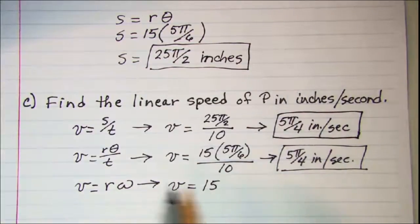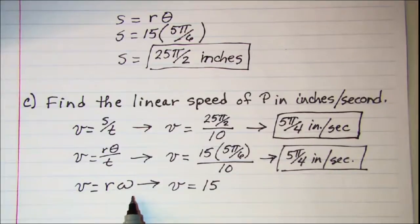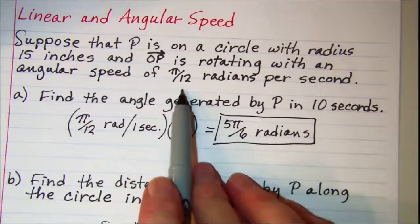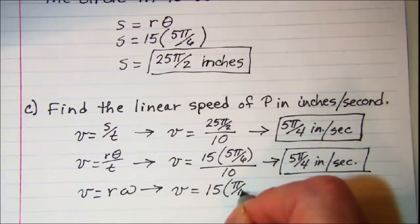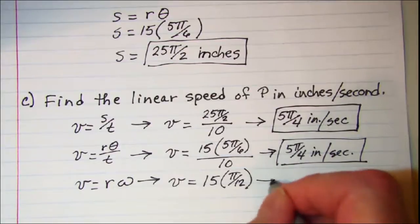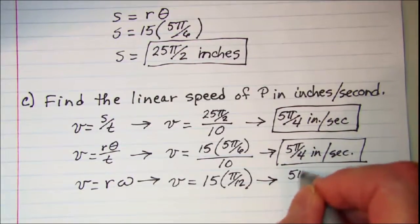And ω was the angular velocity which we saw was π over 12. We can simplify this down to 5π over 4.